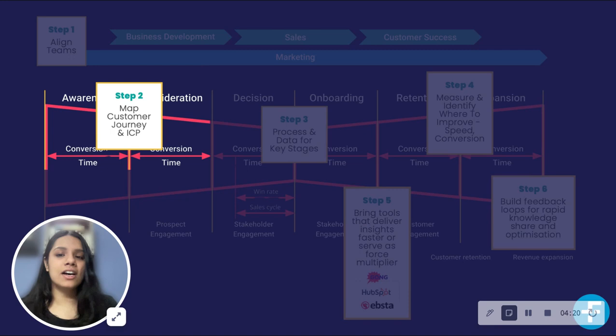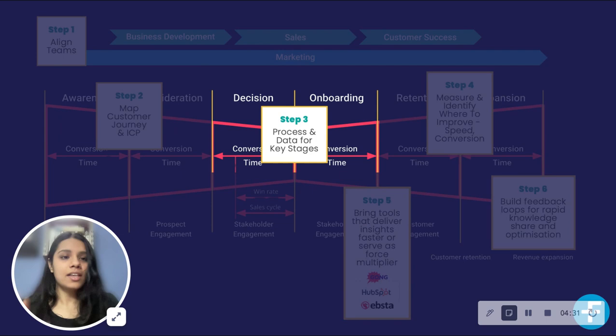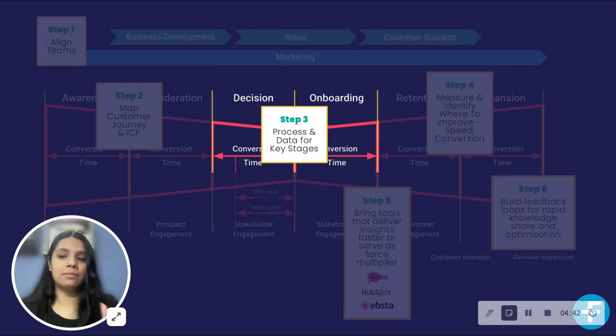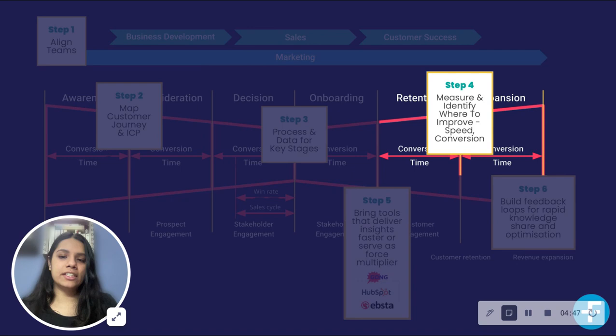Next, mapping the customer journey and identifying the ICP are crucial steps. Understanding target markets, customer pain points, and business goals guides product and service customization. Third, process and data for key stages — incorporating HubSpot stages such as awareness, consideration, and decision ensures a structured approach, providing team members with timely data access for a streamlined sales cycle.